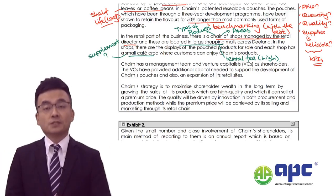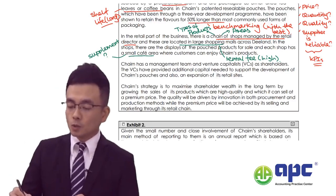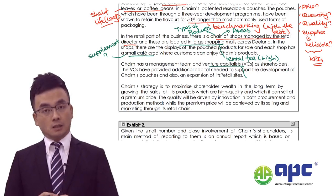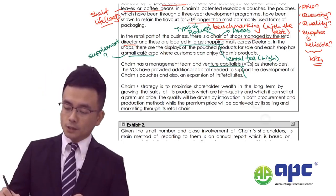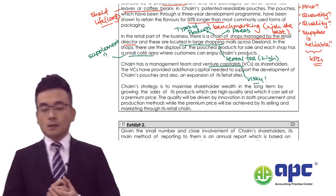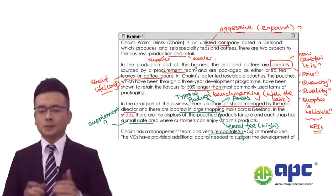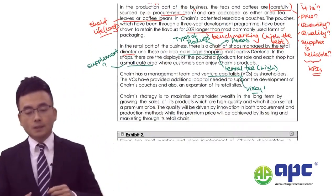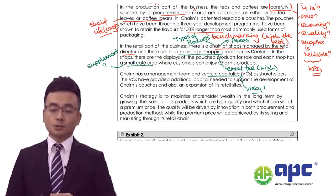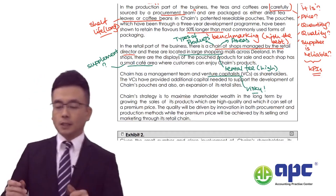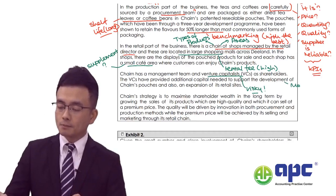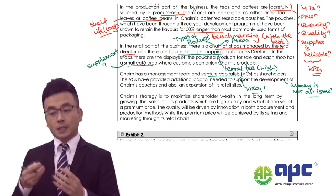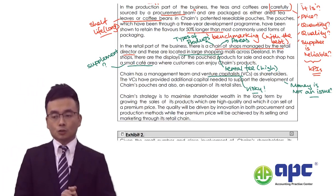Chain has a management team and venture capitalists. VCs are institutional investors who will be quite large in investing money into a chain company — perhaps they are quite risky. They are shareholders. The VC have provided additional capital needed to support the development of the pouches and also the expansion of the retail side. This means money is not an issue, perhaps, because we have investment input from these large shareholders.